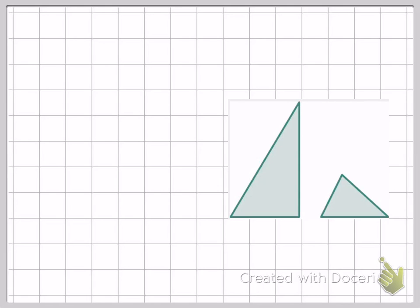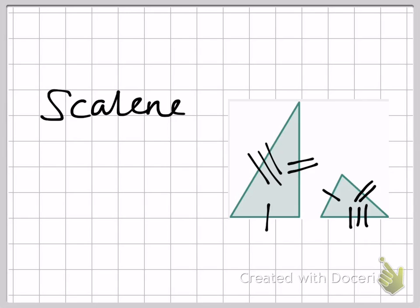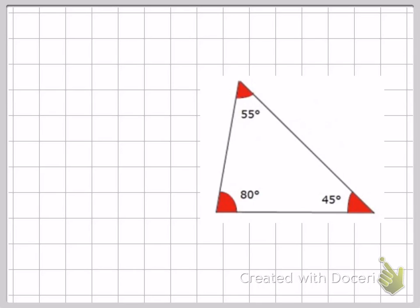These triangles are scalene. Scalene basically means all three lengths are different and all three angles are different. So here we've got short, medium, long, and here we've got short, medium, and long. When you look at these triangles, you also find that the angles are all different. It is possible to get a right-angled scalene, so this angle here is a right angle—still a scalene because it's got three different angles and three different lengths.